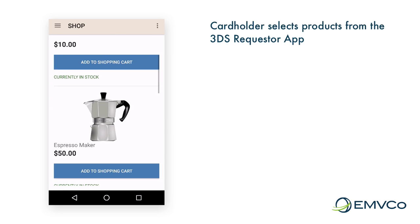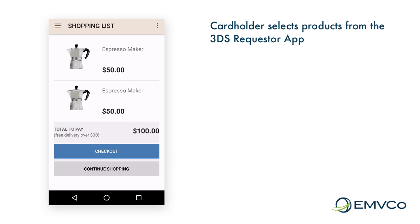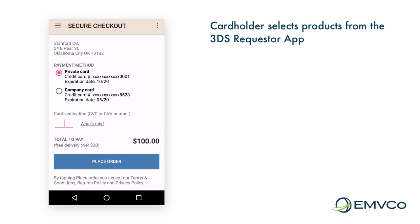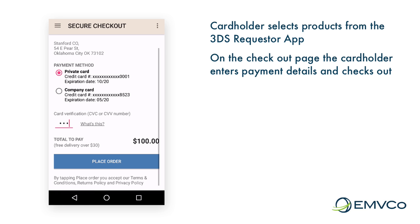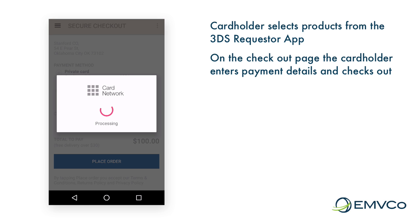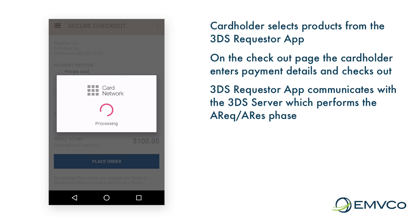As before, the user selects the items to add to the shopping cart, selects a payment method, and then proceeds to checkout. After this, the app communicates with the 3DS server, which sends the authentication request, or AREC, message through the directory server and over to the ACS. The ACS evaluates this transaction and provides the AREC message back as a response.